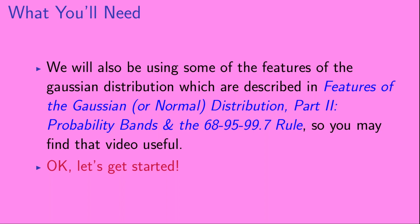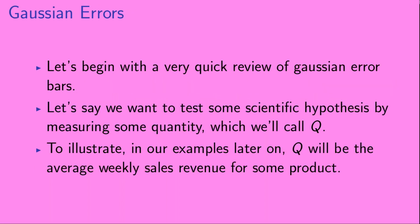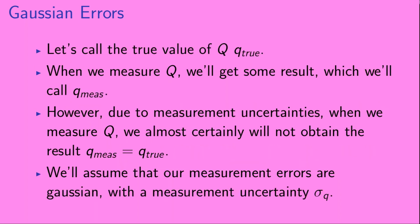Let's begin with a very quick review of Gaussian error bars. Let's say we want to test some scientific hypothesis by measuring some quantity, which we'll call Q. To illustrate in our examples later on, Q will be the average weekly sales revenue for some product. Let's call the true value of Q, Q_true. When we measure Q, we'll get some result, which we'll call Q_measured. However, due to measurement uncertainties, we almost certainly will not obtain the result that Q_measured equals Q_true.